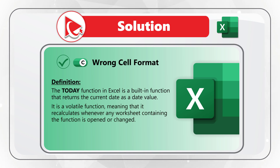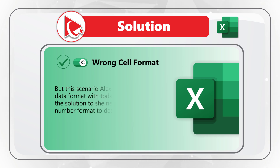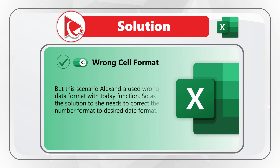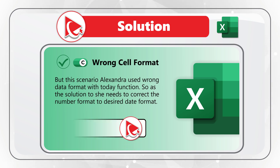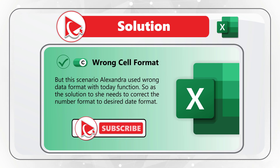It's a volatile function, meaning it recalculates whenever any worksheet containing the function is opened or changed — which makes sense because today is always different from yesterday. The TODAY function is useful for displaying the current date in a cell, but in this scenario Alexandra used the wrong data format with the TODAY function. The solution is to correct the data format to the desired format.